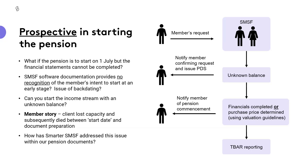SMSF software documentation doesn't really provide us with recognition of the member's intent to start at an earlier stage. So when we put information into SMSF software and say it's a 1 July start, it will naturally prepare paperwork at that point in time. We've then got things that maybe we shouldn't be backdating, because of the fact that we needed that original notification, but also because of the T-bar requirements that we need to do as well.